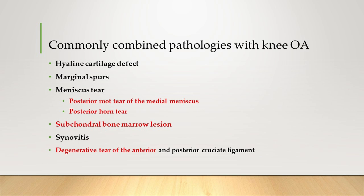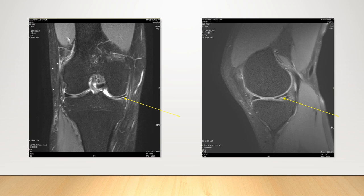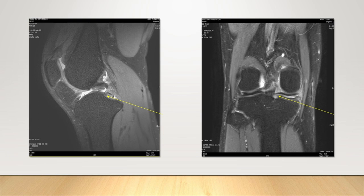It is a case of horizontal tear of the posterior horn of the medial meniscus with a posterior root tear. The posterior aspect of the meniscus is the most common site of pain generator of meniscal pain. It is a case of a massive tear of the posterior horn of the medial meniscus with a posterior root tear.